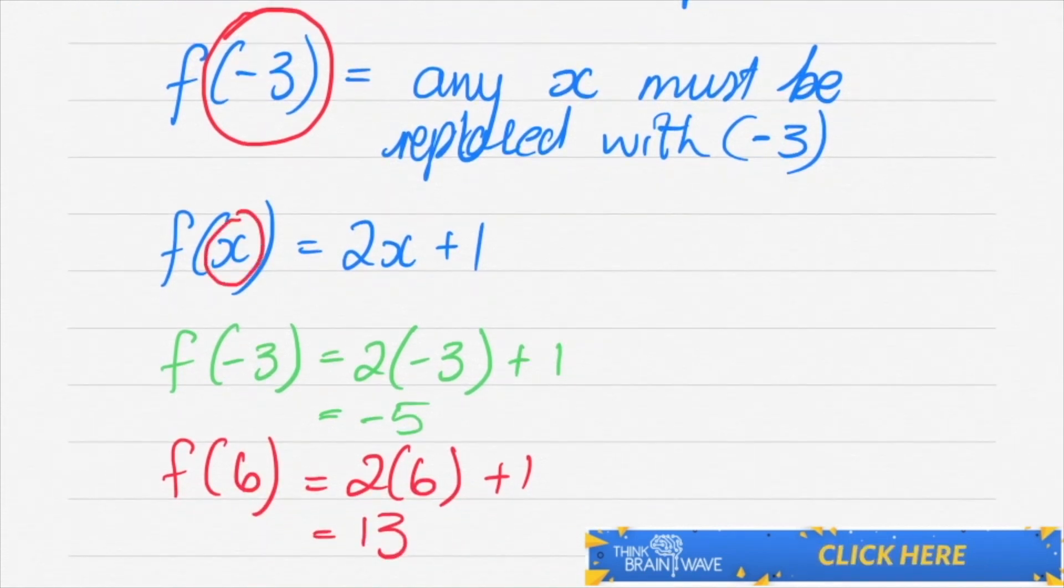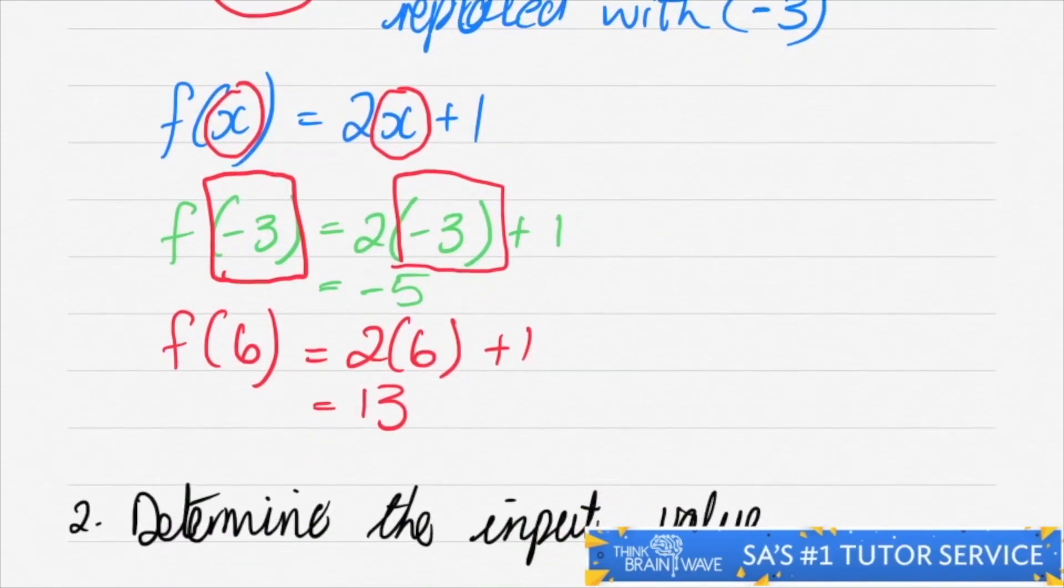As we can see, you've got an X over here and that's what this remains. An X over here, we have a minus three, so we plug in a minus three where there's an X, we calculate and we find a solution of minus five.